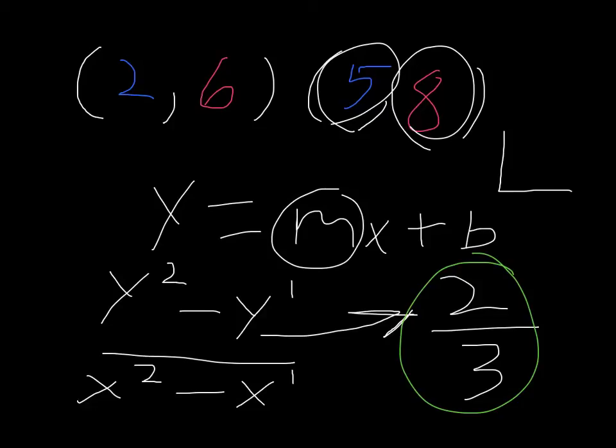So, if the line started here, it would go up 2 and over 1, and our next point would be here, and so on, and so on.